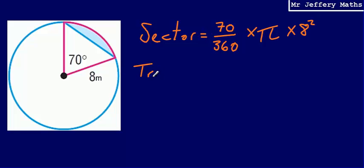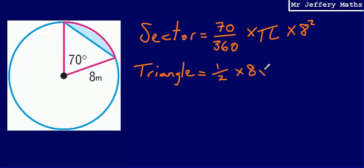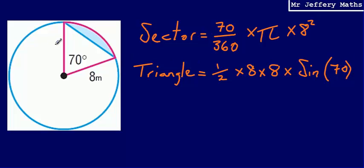Then working out the area of the triangle, I'm going to use the half ab sine c formula again. That gives me half multiplied by the two lengths which trap the angle, so half multiplied by 8 multiplied by 8, and then multiplied by the sine of the angle being trapped by those two lengths, which is 70. Note that both lengths are 8 because they are both radii of the circle.